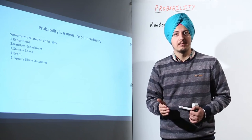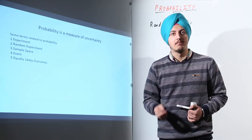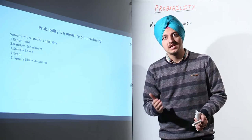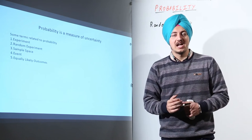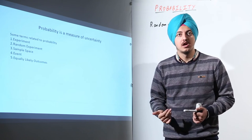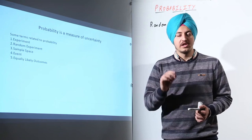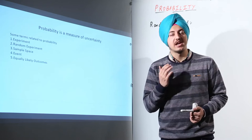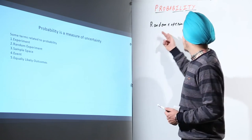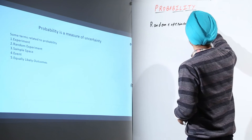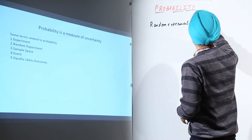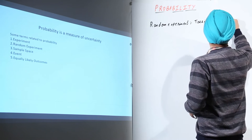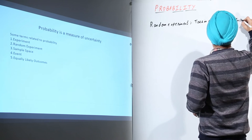Consider an experiment where I throw a ball on the ground — I know the ball is going to rest on the ground, so it is just an experiment. But when I toss a coin or roll a dice, I do not know what the outcome is going to be — it can be heads or tails, or anything between one to six. So the examples of a random experiment are tossing a coin or rolling a dice.